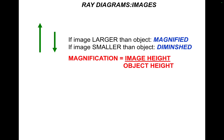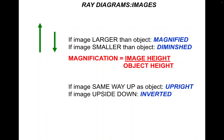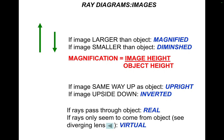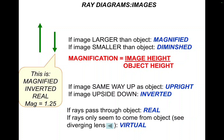If the image is larger than the object, it's magnified. If the image is smaller than the object, we use the word diminished. Magnification is simply image height divided by object height. If the image is the same way up as the object, we call it upright. If the image is upside down compared to the original object, we say it's inverted. And finally, if the rays actually pass through the image point, it's a real image. If the rays appear to come from the same side as the object, it's a virtual image. Real images can be projected onto a screen; virtual images cannot.